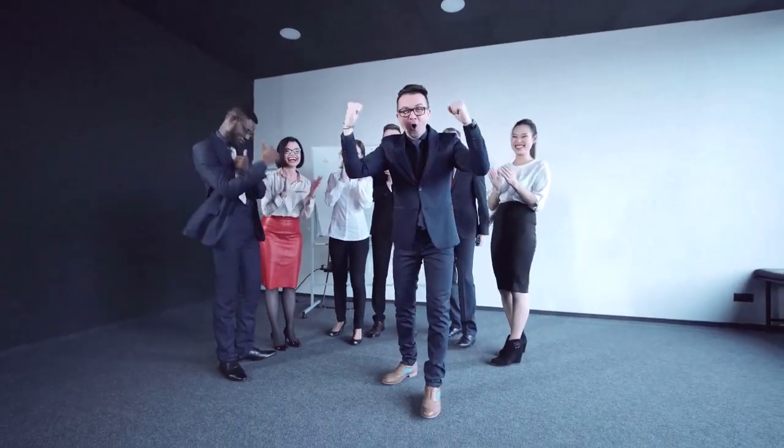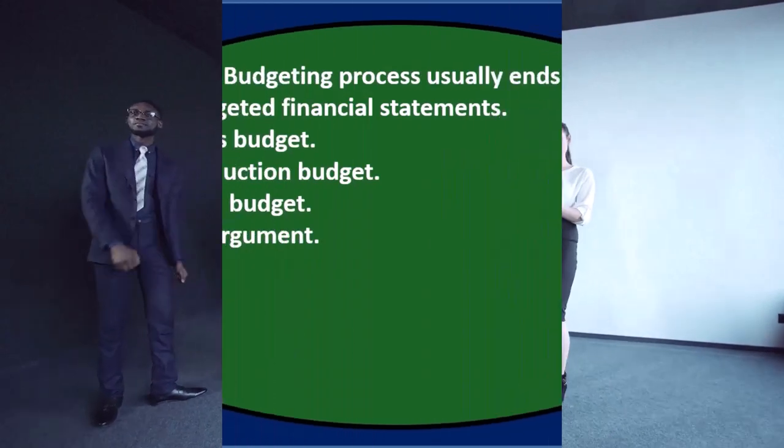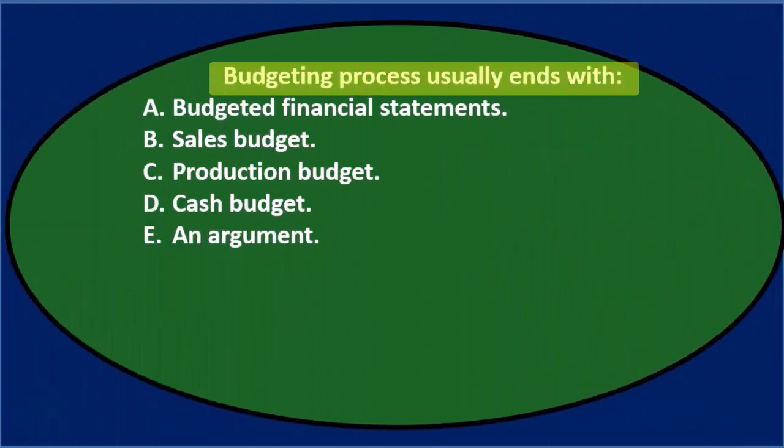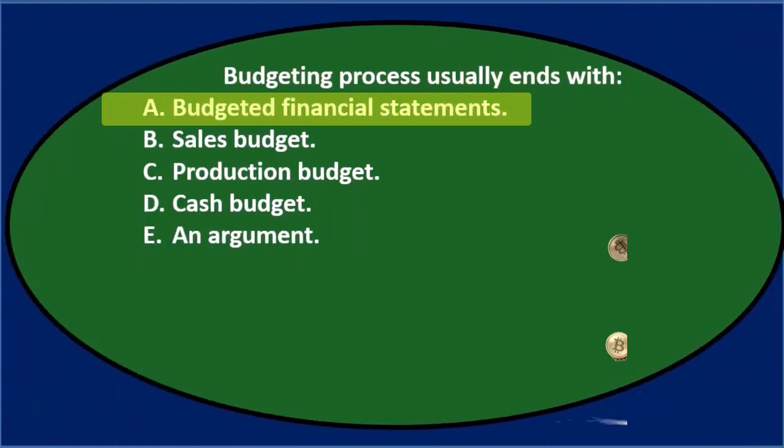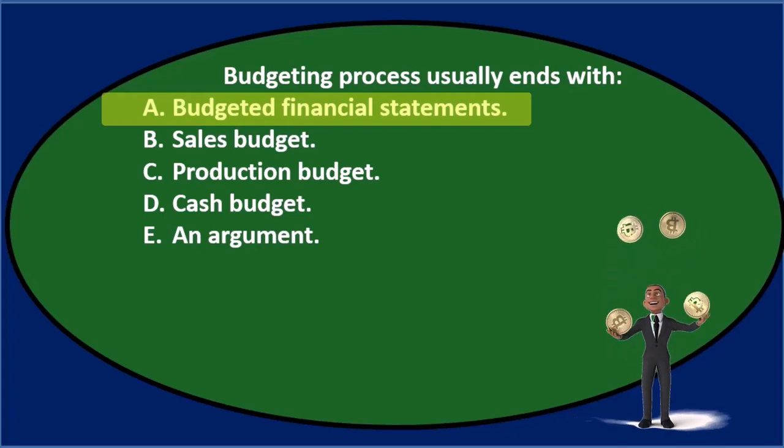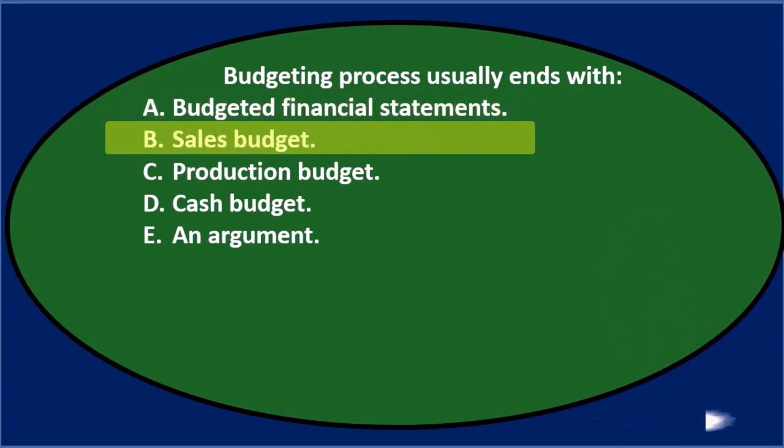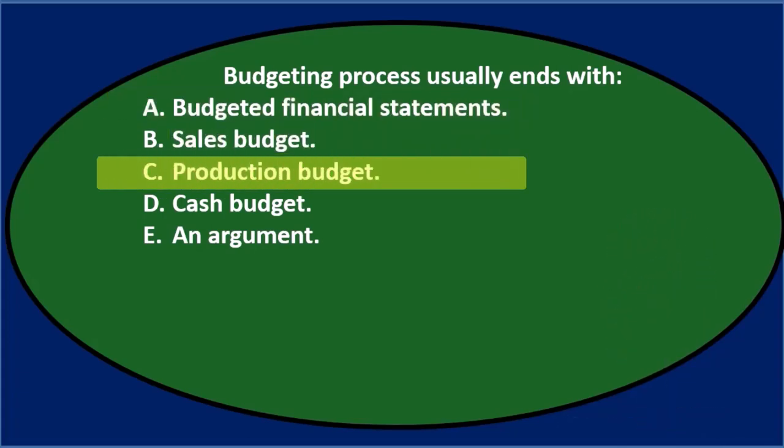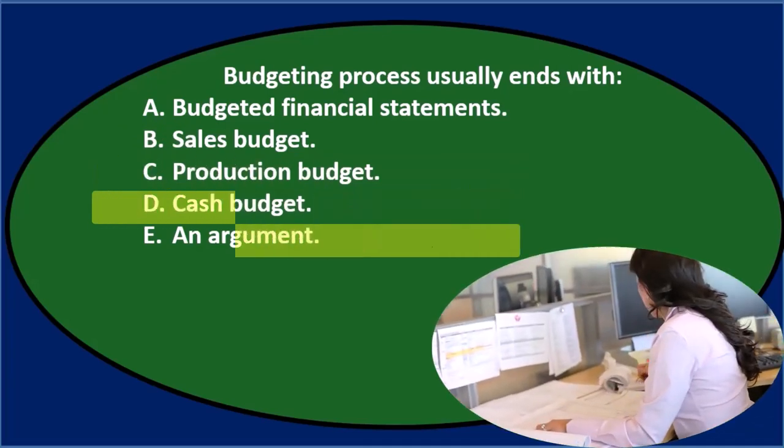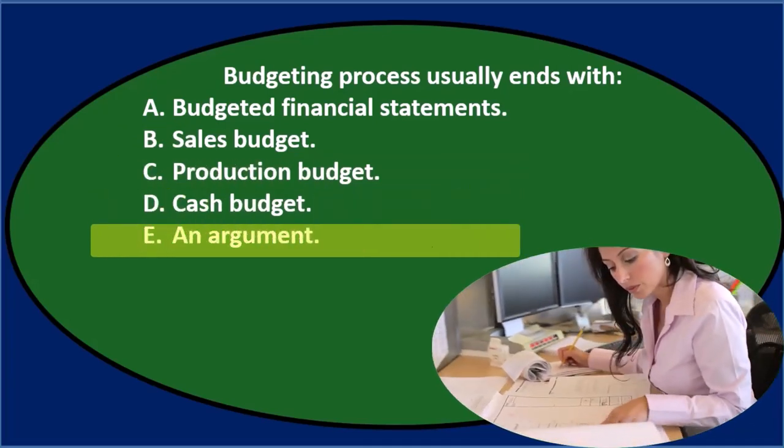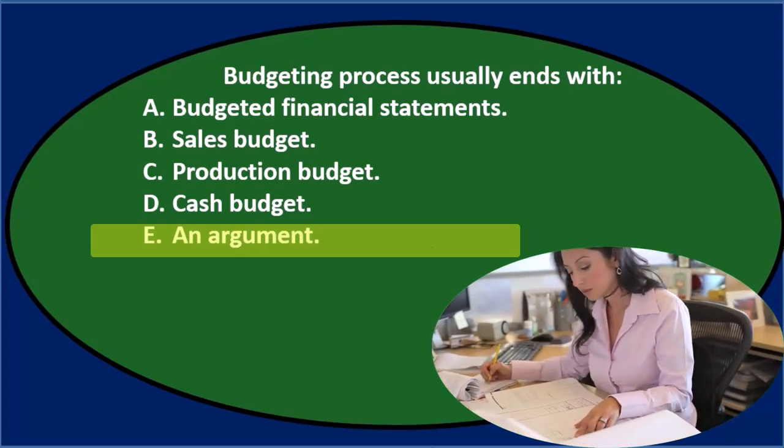First question: Budgeting process usually ends with A. Budgeted financial statements, B. Sales budget, C. Production budget, D. Cash budget, E. An argument. Let's go through this again using the process of elimination.